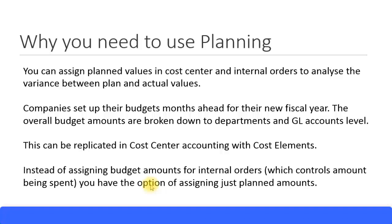You can also put your own amounts for different months. Why you need to use planning is because companies initially set up budgets for different years — for example, they will plan budgets three to six months ahead for next year. This budgeting is done for the income statement, not usually for the balance sheet statement, because the income statement is a periodical statement whereas the balance sheet reflects current amounts as of today.